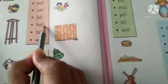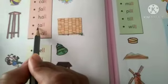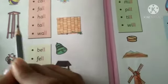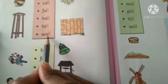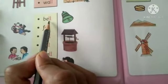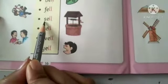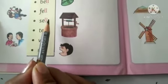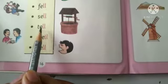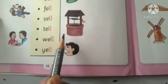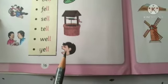H-A-L-L: Hall. T-A-L-L: Tall. W-A-L-L: Wall. B-E-L-L: Bell. F-E-L-L: Fell. S-E-L-L: Cell. T-E-L-L: Tell. W-E-L-L: Well. Y-E-L-L: Yell. Okay?